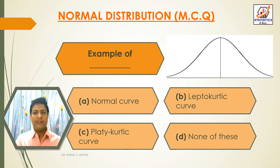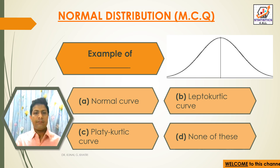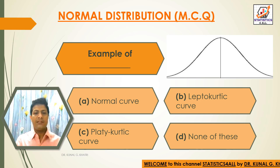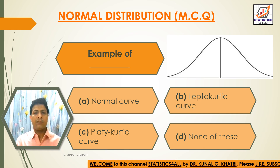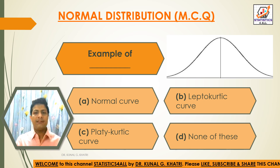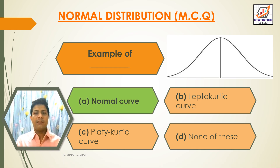Next question: this image is an example of what? Option A: Normal curve. Option B: Left-skewed curve. Option C: pi. Option D: none of these. The answer is Option A — this image shows a normal curve.